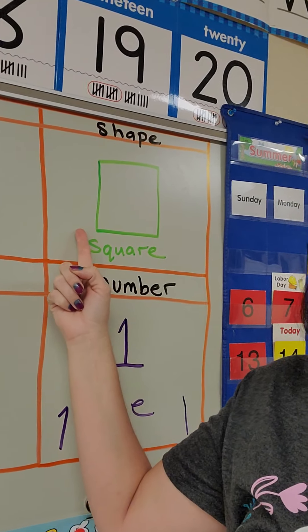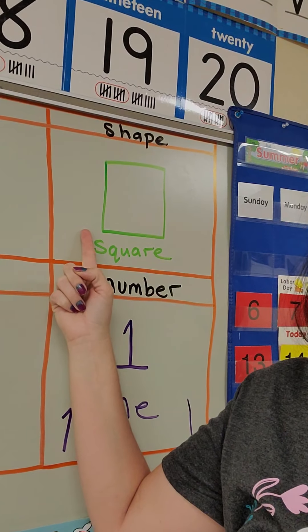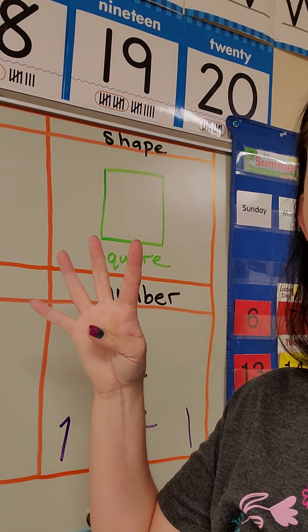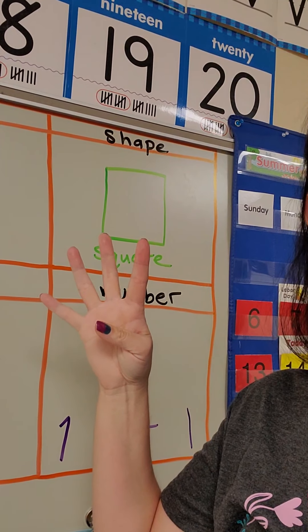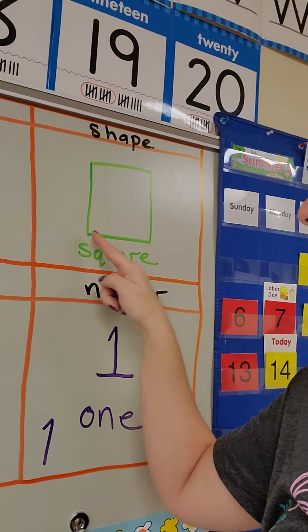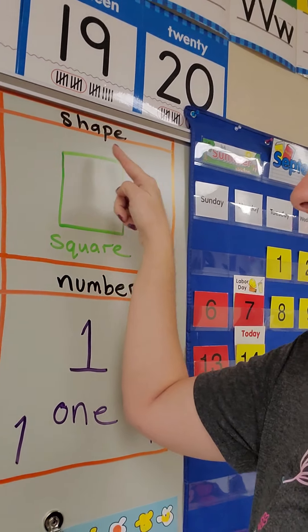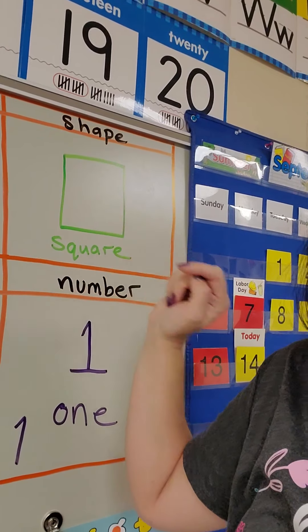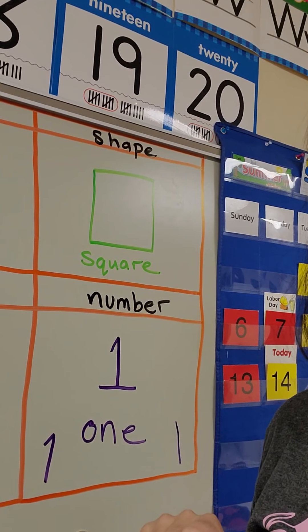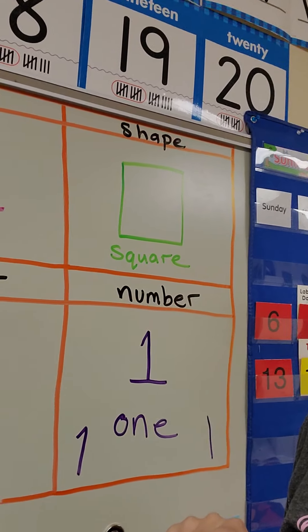Our shape this week is square. A square has four sides that are all the same length — that's how you know it's a square.